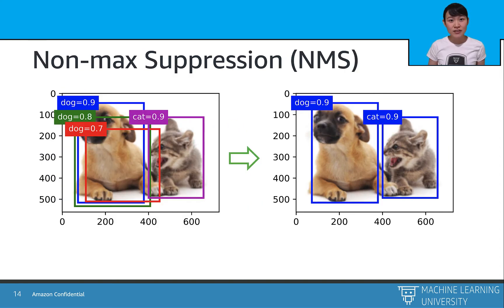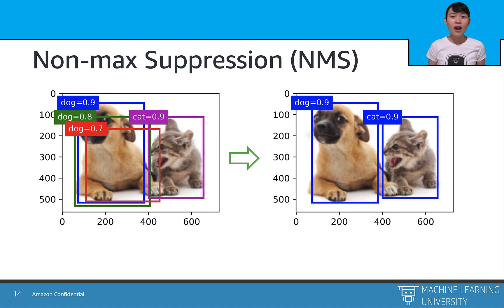After running through the different bounding boxes or anchor boxes, we may output many boxes. But if we look closer at the output, we may find that many similar bounding box predictions point towards the same target. The ideal prediction output has clean, non-duplicate boxes. To solve this issue of duplicate similar boxes, we will use a technique called NMS, or non-max suppression.